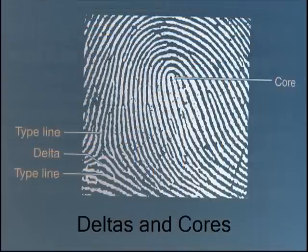A delta is a point of divergence of two type lines. A core is the center of the pattern. Loops begin on one side of the finger, curve around and upwards, and exit on the other side. They are composed of a core and a delta, and make up 65 percent of all fingerprints.